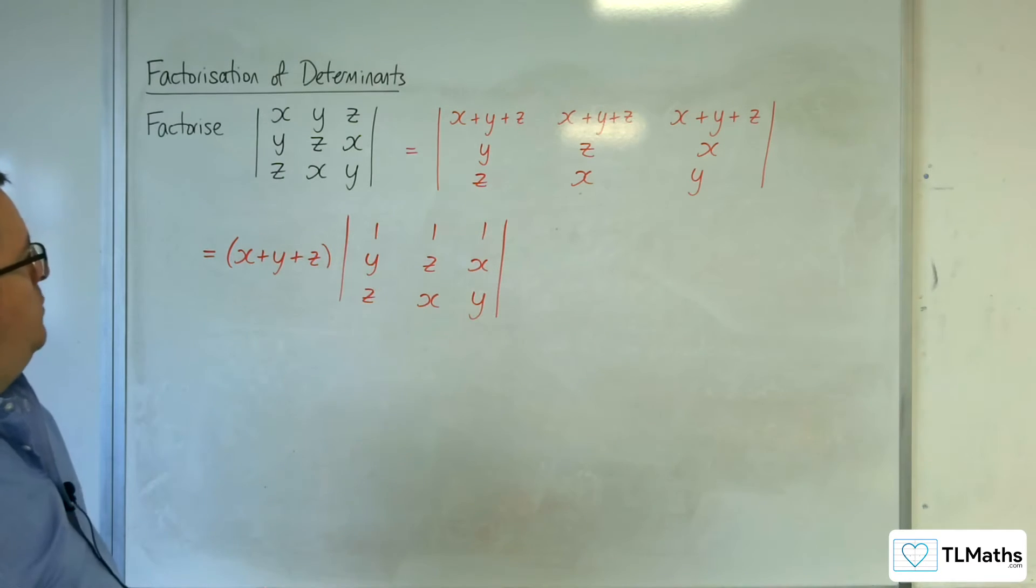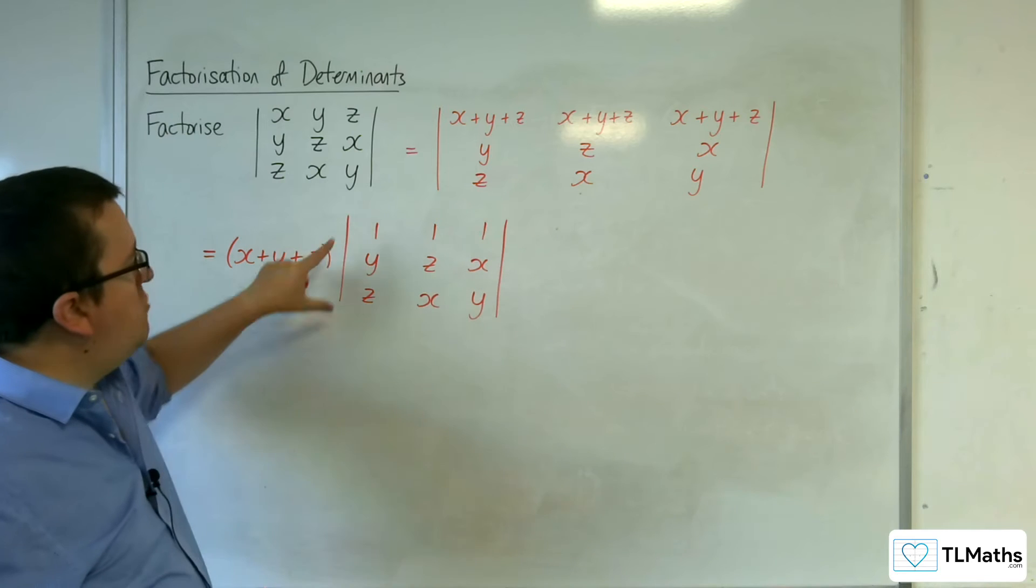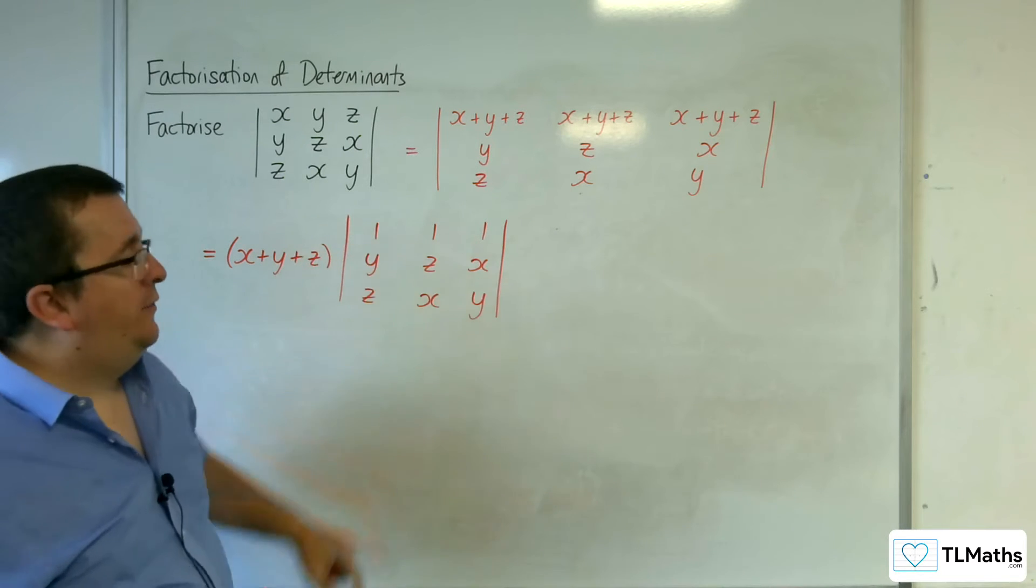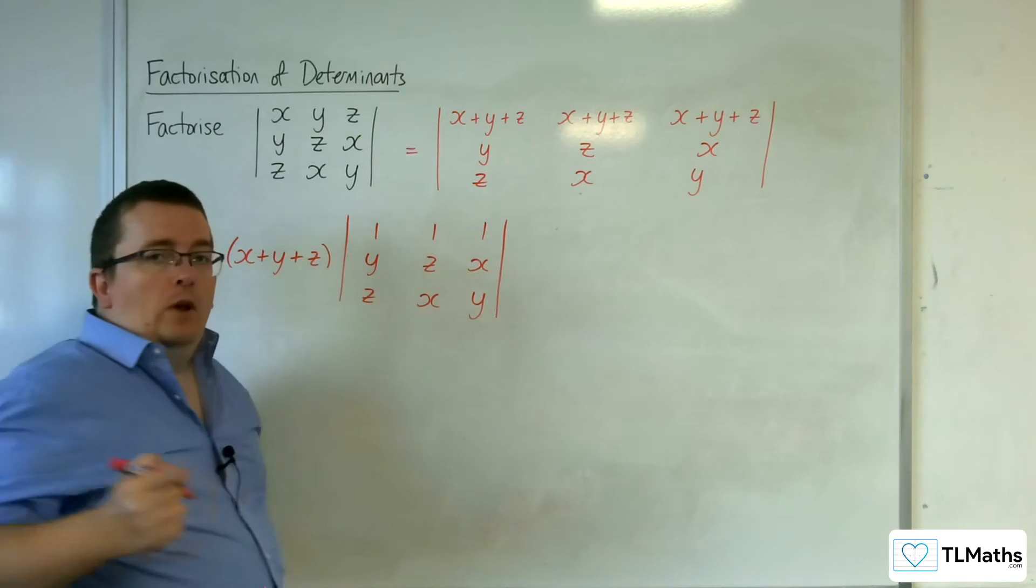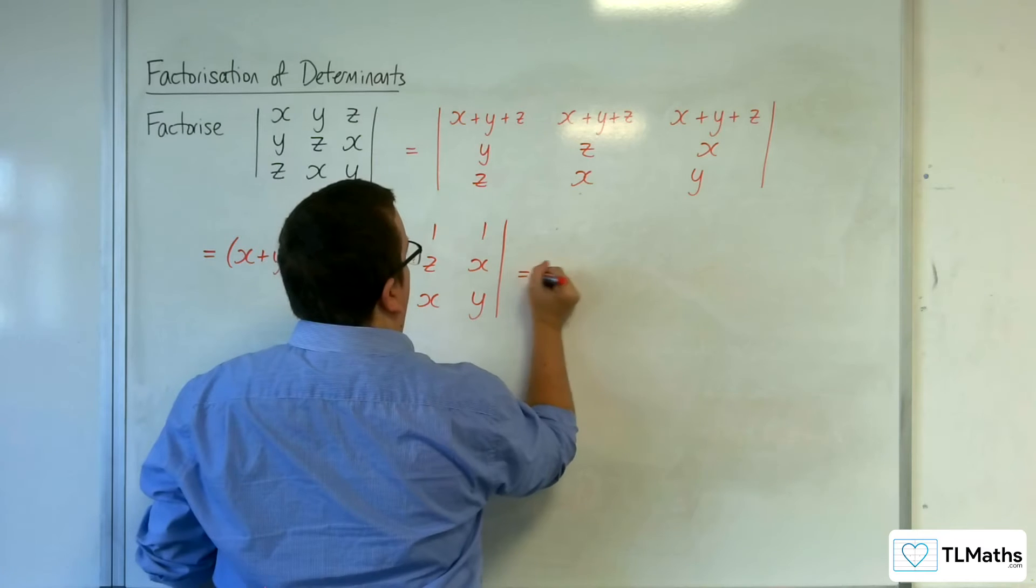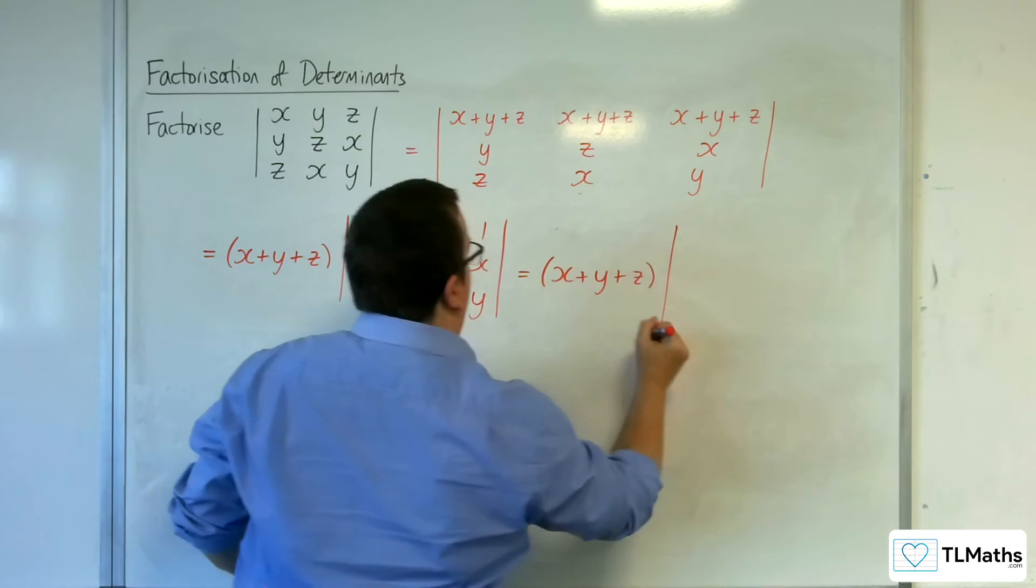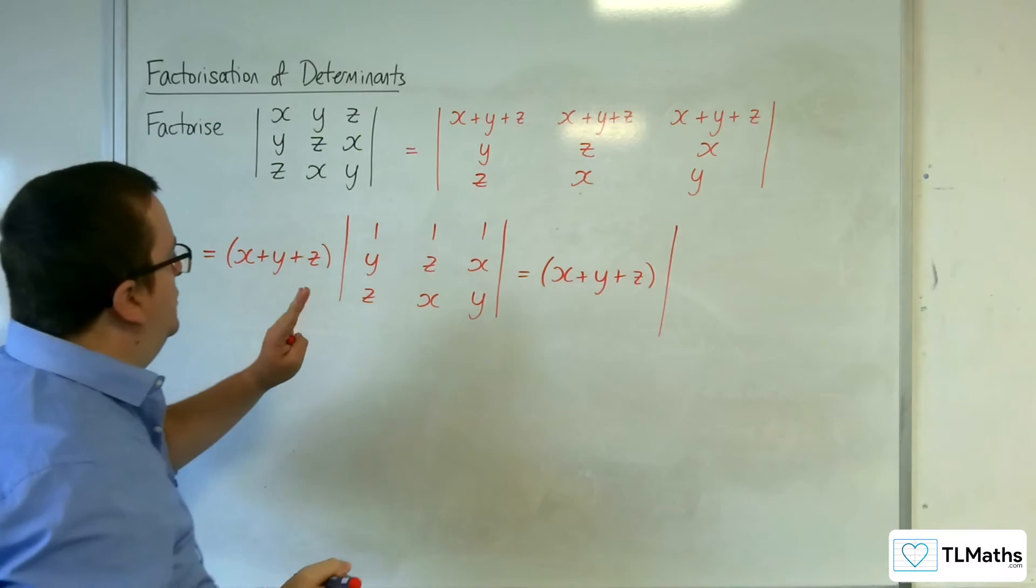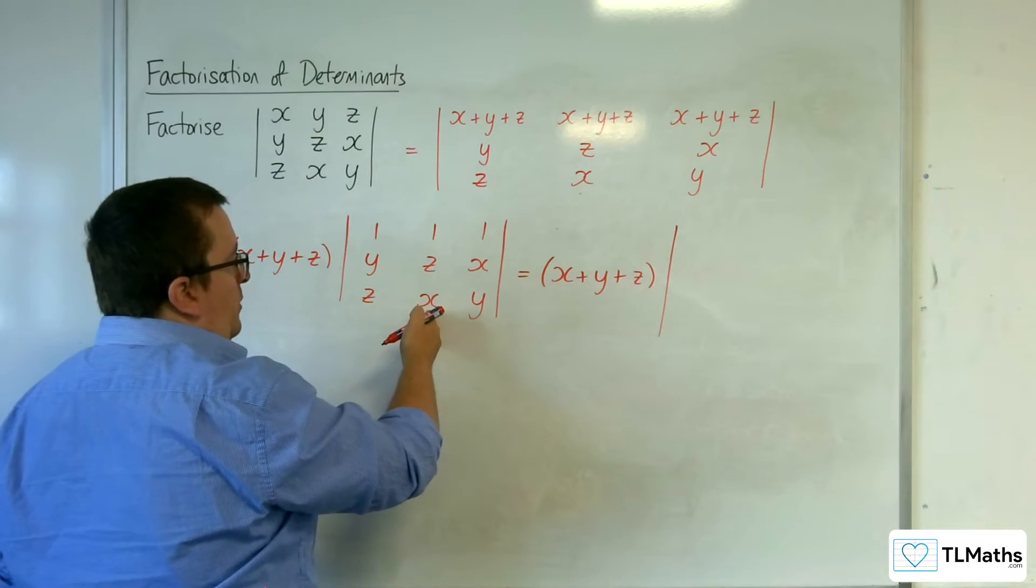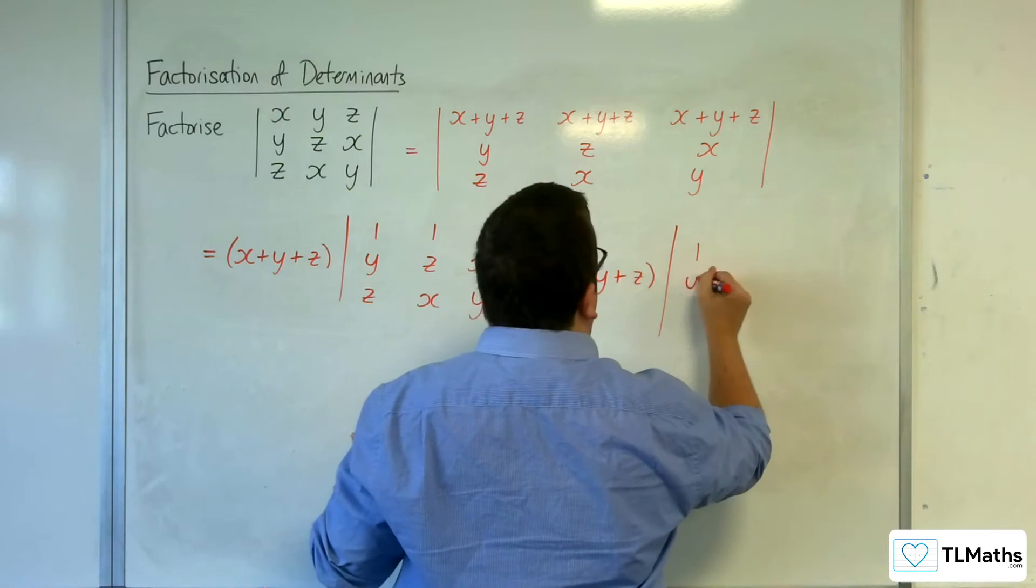So the next thing I'd probably want to do is, because I've got these 1s here, if I subtract column 1 from each of these, I can get 0s in those two elements there. So I've got the x plus y plus z out the front. And I'm going to do column 2 take away column 1. So column 1 is going to stay the same, 1, y, z.